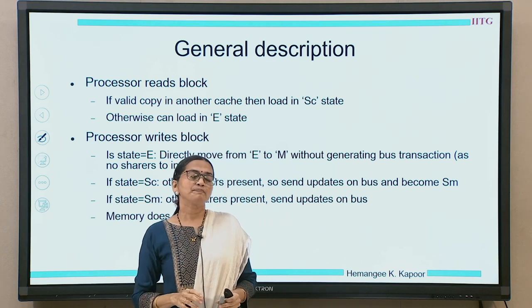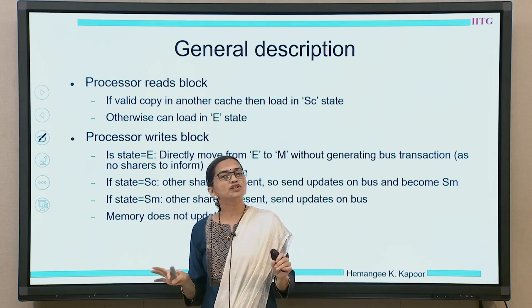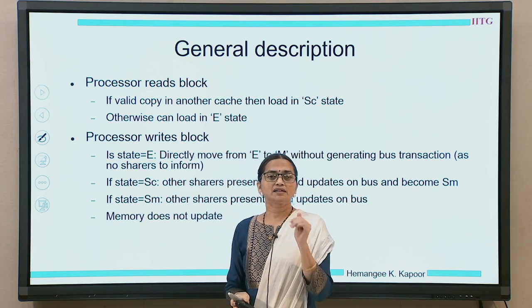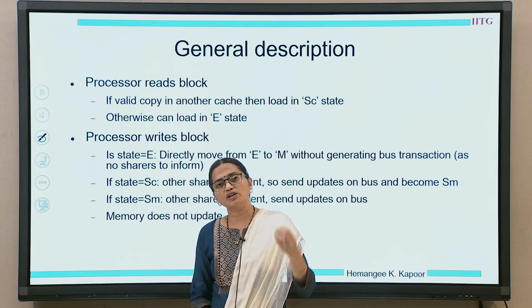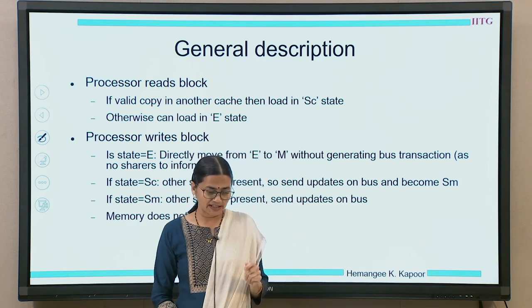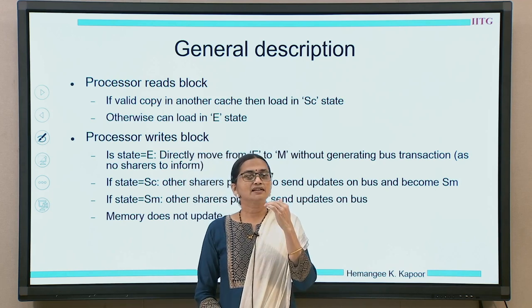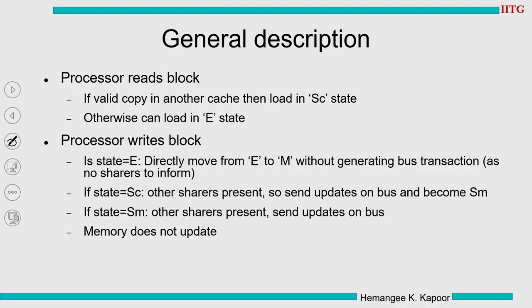On a read, we go either to E or to SC. On a processor write, if there are no other sharers and the block is in state E (exclusive), we can start writing without informing others — simply move to M. If we are in state SC or SM we need to do something else. When the state is E on a write, go directly to M without generating any bus transaction.